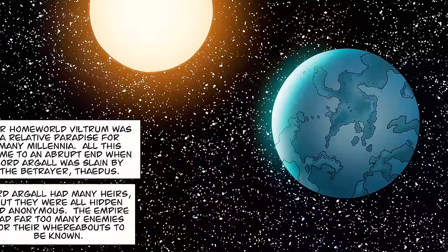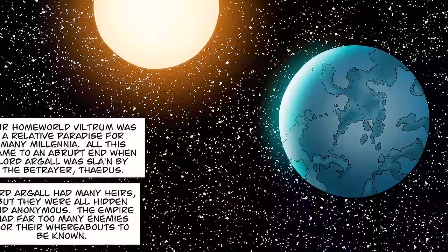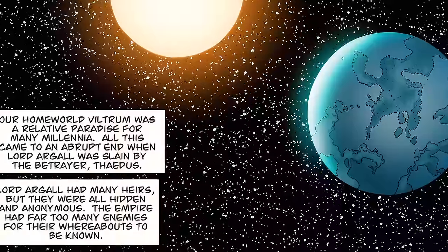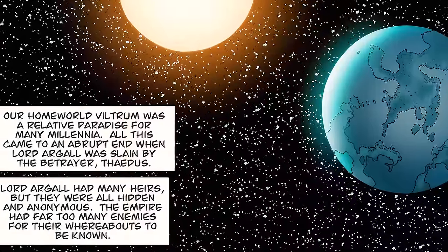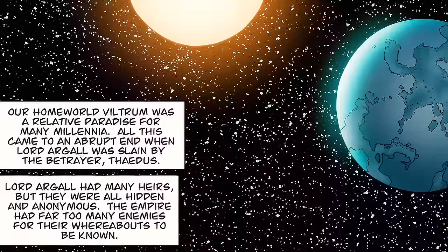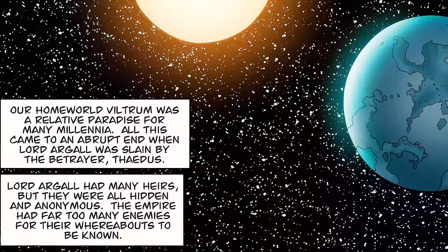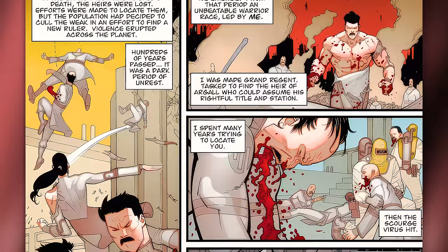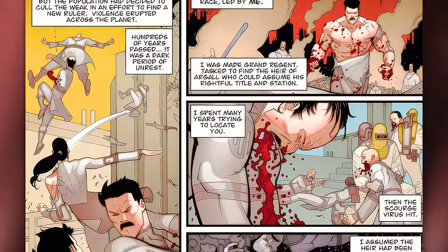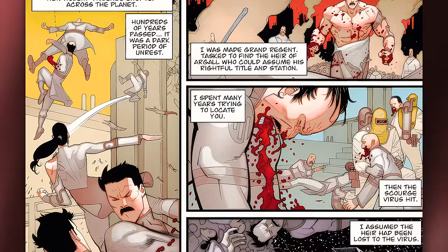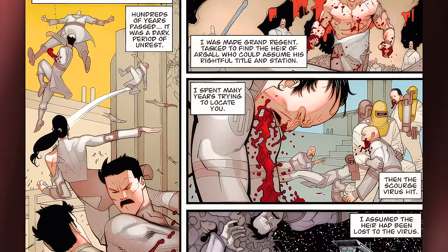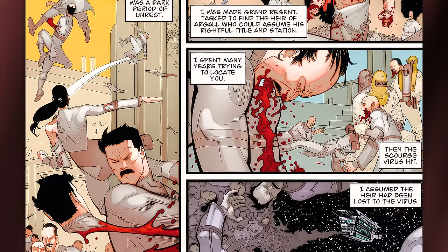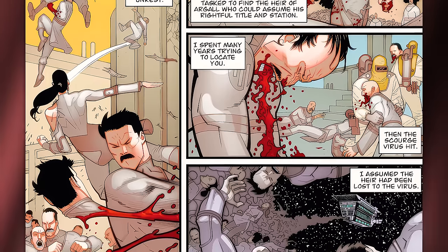Thragg explains: 'Our homeworld Viltrum was a relative paradise for many millennia. All that came to an abrupt end when Lord Argall was slain by the betrayer Thaddeus. Lord Argall had many heirs, but they were all hidden and anonymous — the empire had far too many enemies for their whereabouts to be known. In the chaos following Argall's death, the heirs were lost. Efforts were made to locate them, but the population had decided to cull the weak in an effort to find a new ruler. Violence erupted across the planet; hundreds of years passed. It was a dark period of unrest.'